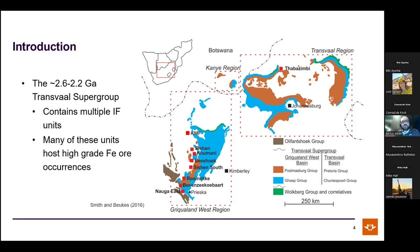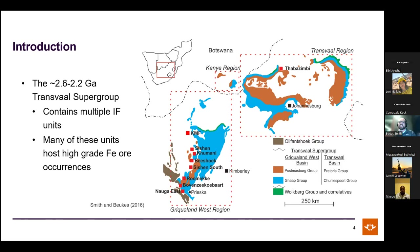The focus is the Griquarand West region of the Northern Cape Province. The Transvaal Supergroup is an incredible succession with interesting carbonate successions, straddles the Great Oxidation Event, and contains multiple iron formation units — quite a few of which can host high-grade iron ore, offering a variety of deposits to study.